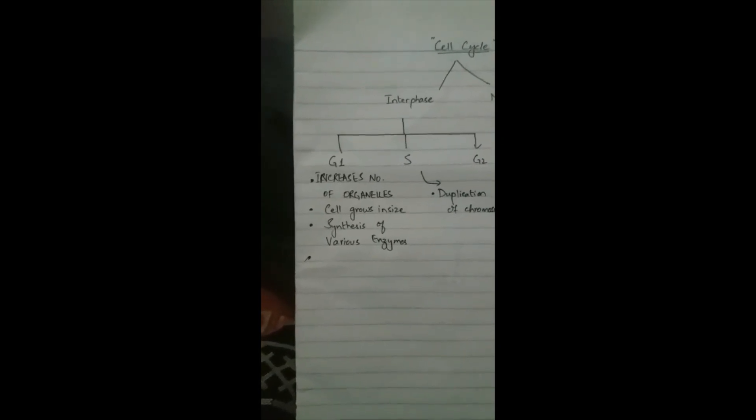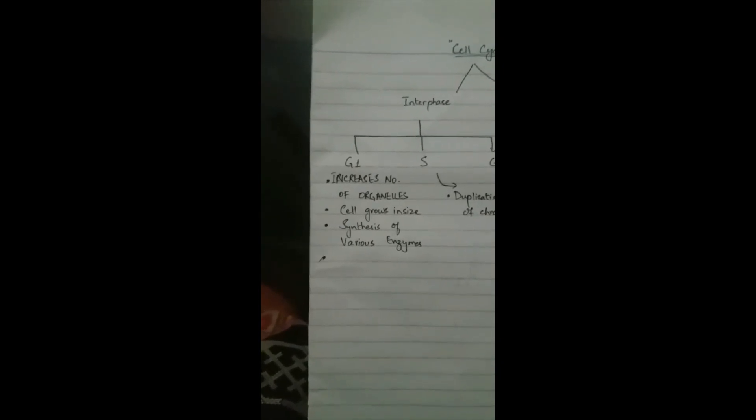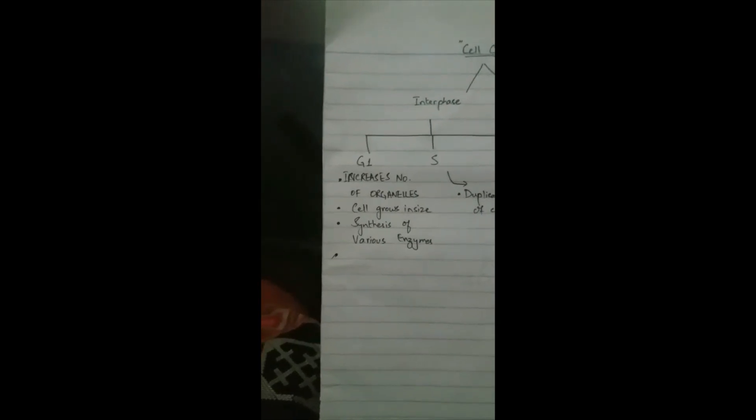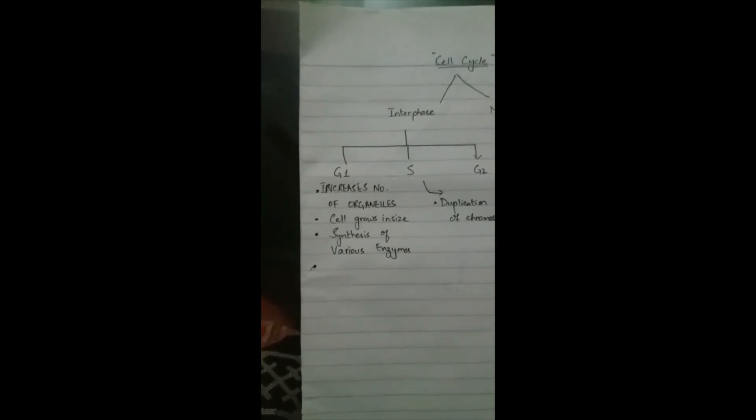In G1 phase, the cell increases its supply of proteins, which increases the number of organelles. We have studied in chapter four different organelles like mitochondria, Golgi apparatus, vacuoles, centrioles, and plastids. As a result, the cell grows in size as well.